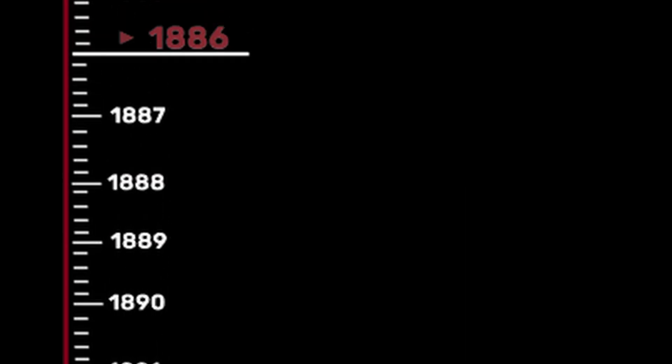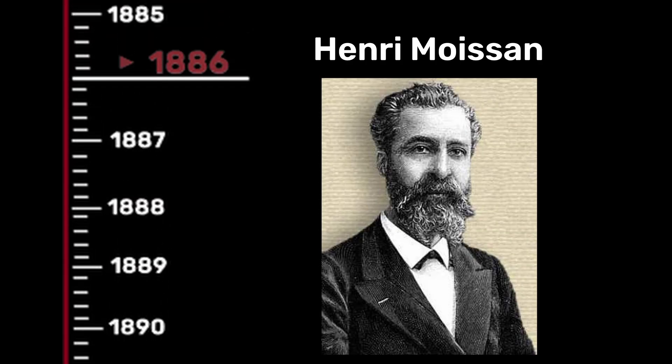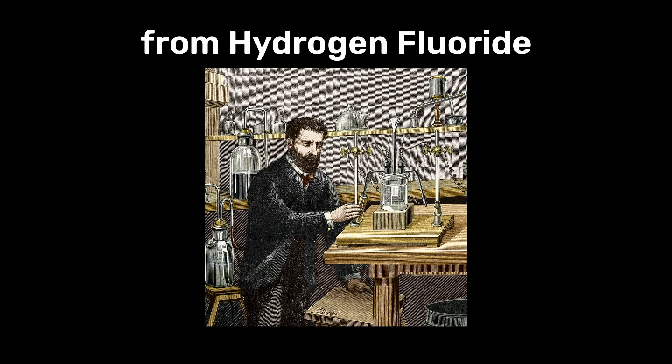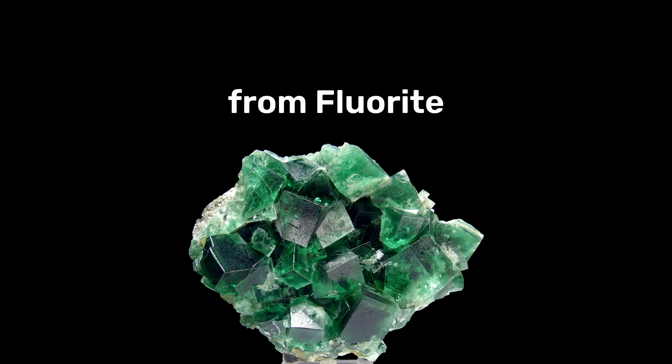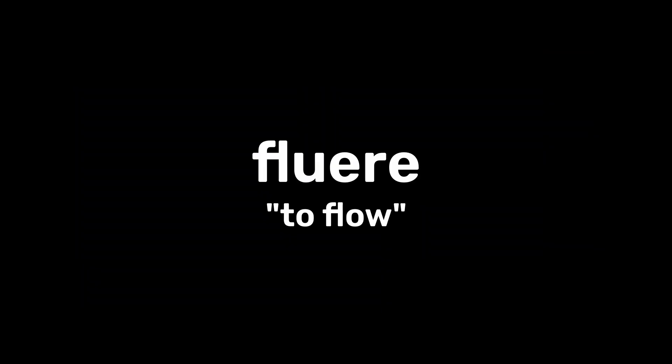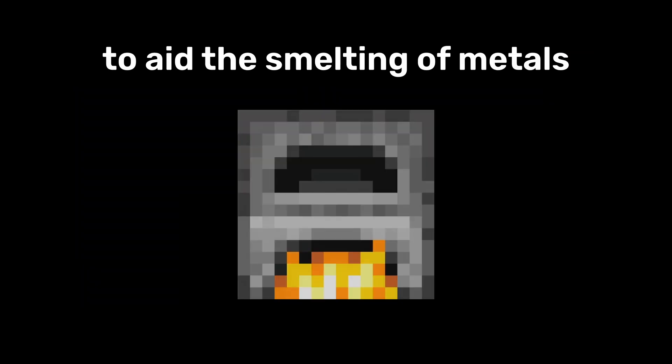Fluorine was first isolated in 1886 by the French chemist Henri Moissan, who used electrolysis to separate it from hydrogen fluoride. The element gets its name from the mineral fluorite where it was first discovered. The term fluorite comes from the Latin word 'flore', meaning to flow, as fluorite was originally used to aid the smelting of metals.